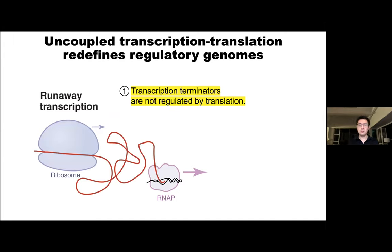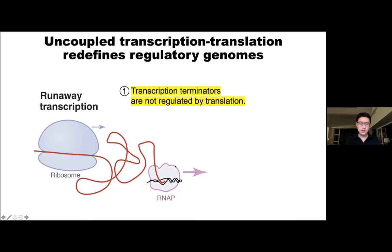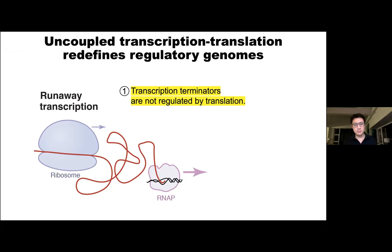Putting these numbers into context: by the time the RNA polymerase transcribes a typical length of 1,000 nucleotides, it leads to about 360 nucleotide separation between the two motors. That would have the important consequence that the RNA polymerase should not be sensitive to translation. This sets very different rules for co-transcriptional gene regulation — unlike E. coli, if the ribosome is far behind the RNA polymerase, transcription terminators will not be regulated by translation.